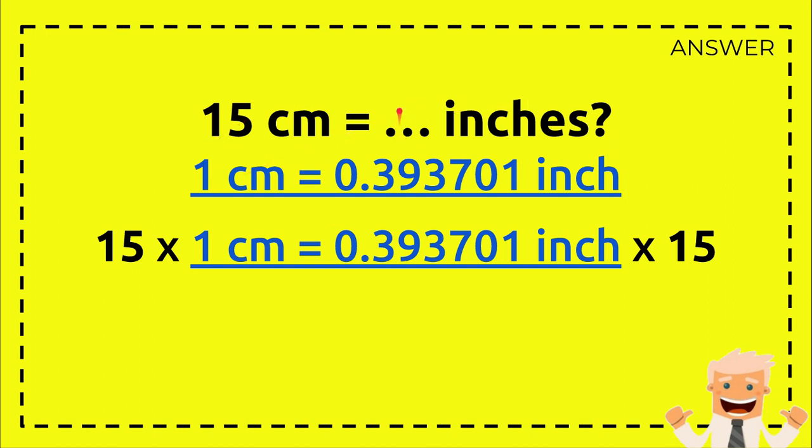And then, because we already have 15 here, we need to multiply 15 with this number, because it's impossible to multiply 15 with inches. Inches doesn't have any value; it's a measurement unit. Because of that, you need to have a value. We have the value from this formula. So multiply one centimeter with 15 and multiply this number with 15 as well.